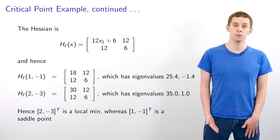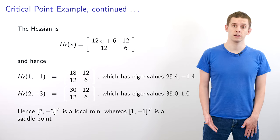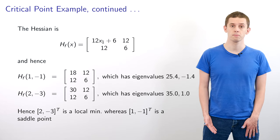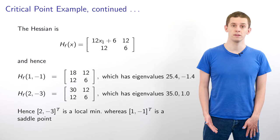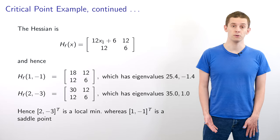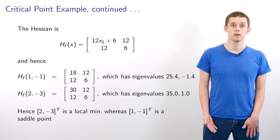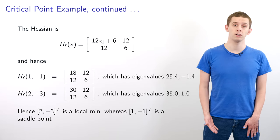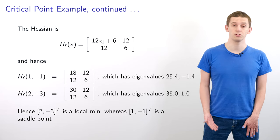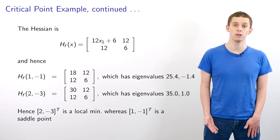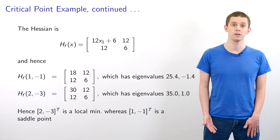We evaluate the Hessian of f and find it has components 12x₁ + 6, 12, 12, and 6. Evaluating the Hessian at (1, -1) gives eigenvalues of approximately 25.4 and -1.4. Evaluating the Hessian at (2, -3) gives eigenvalues of 35 and 1. Based on the signs of the eigenvalues, (2, -3) is a local minimum and (1, -1) is a saddle point.